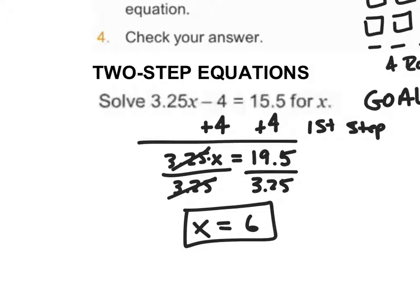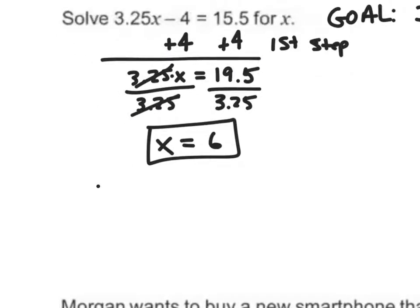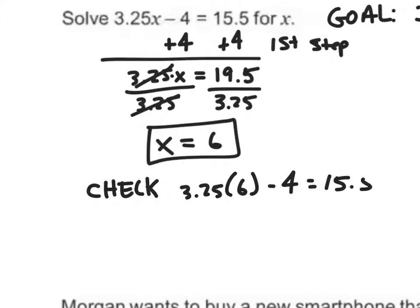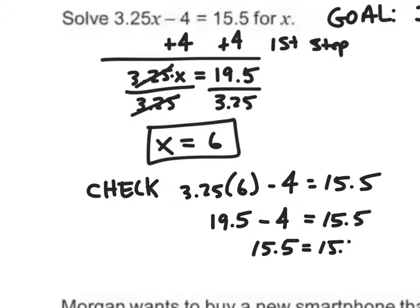Let's check this with my original equation. I'll do 3.25 times 6 minus 4 — does that give me 15.5? 3.25 times 6 gives me 19.5, minus 4 should give me 15.5. 19.5 minus 4 gives me 15.5, and that's equal to 15.5. This is true, therefore that's my answer and we've done that correctly.